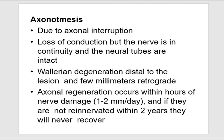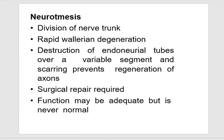Axonotmesis is due to axonal interruption. Loss of conduction occurs but the nerve is in continuity and the endoneurial tubes are intact. Wallerian degeneration occurs distal to the lesion and a few millimeters proximal. Axonal regeneration begins within hours of nerve damage, with recovery at 1 to 2 mm per day; if muscles are not re-innervated within 2 years, they will never recover. Neurotmesis is division of a nerve trunk. Rapid Wallerian degeneration occurs, destruction of endoneurial tubes over a variable segment, and scarring prevents regeneration of axons — surgical repair is required. Function may be adequate but is never normal.